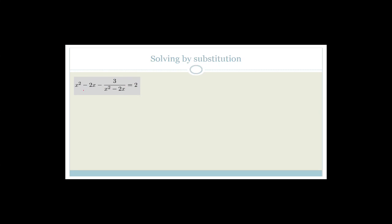If you get given a question like this — x squared minus 2x minus 3 over x squared minus 2x equals 2 — obviously in order to factorize this, we want to get rid of the denominator. One thing we could do is multiply the whole thing through by the denominator. But then you'd end up with x to the 4 minus 2x cubed terms and it would just be terrible.